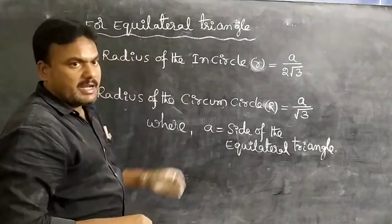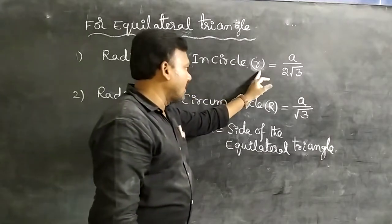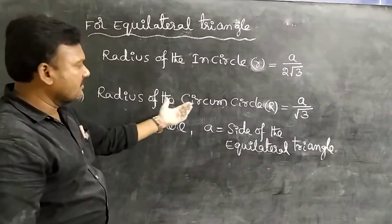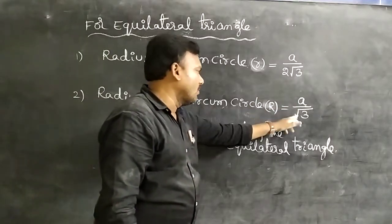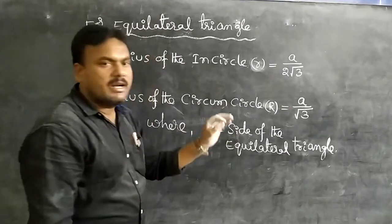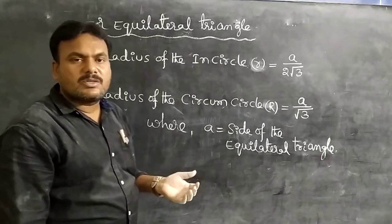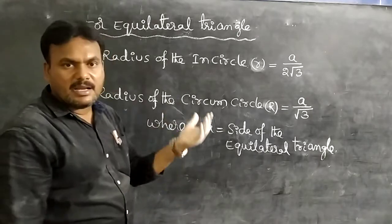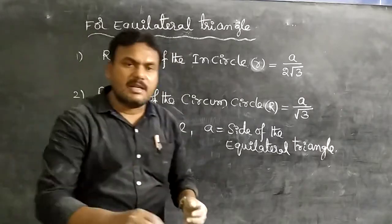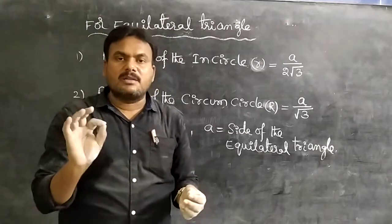For an equilateral triangle: the radius of the incircle is r = a / (2√3), and the radius of the circumcircle is R = a / √3, where a is the side of the equilateral triangle. Note there is no isosceles triangle here — only scalene and equilateral. All of you must write this information in your notebook and learn it carefully.